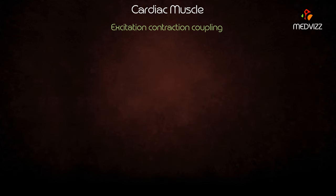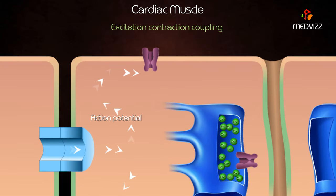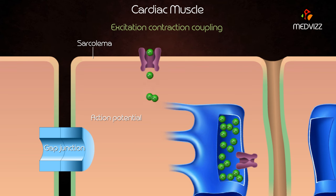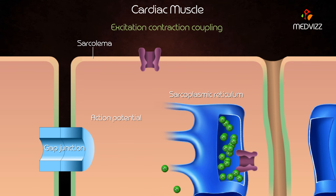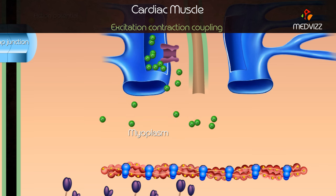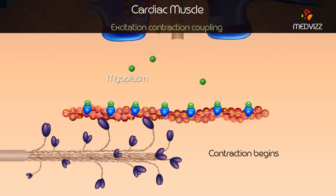Excitation-contraction coupling of the cardiac muscle: the action potential spreads through the cells and across the surface of the sarcolemma via gap junctions. Voltage-gated calcium channels present in the sarcolemma get activated, and calcium diffuses into the intracellular fluid from the extracellular fluid. The free calcium intracellularly activates voltage-gated calcium channels of the sarcoplasmic reticulum, and calcium diffuses from the sarcoplasmic reticulum to the myoplasm. The calcium that diffuses into the cell and through the calcium release channels attaches to troponin and initiates contraction.